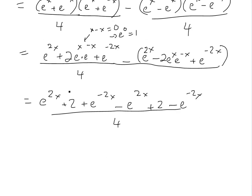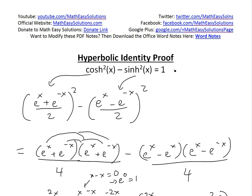And now we just cancel the like terms. This one's canceled, this cancels with this. This is an e to the negative 2x, and because this subtracted to be 0. So now all we'll have to do is 2 plus 2 is 4. So we'll have 4 over 4 equals 1. And there is our proof.